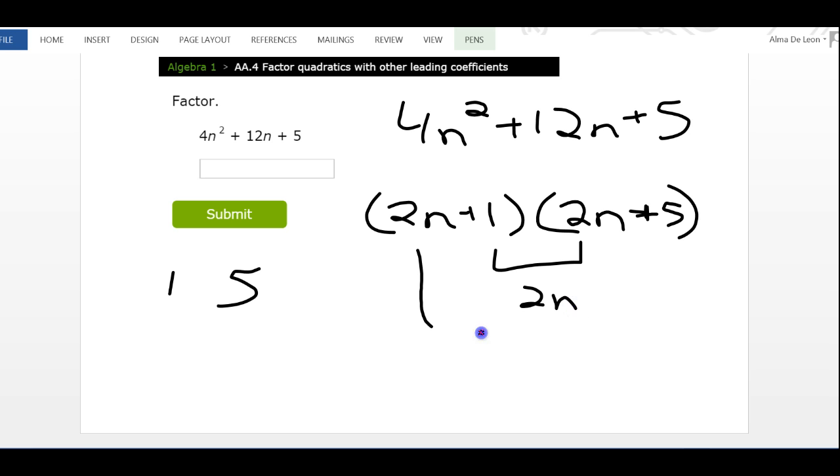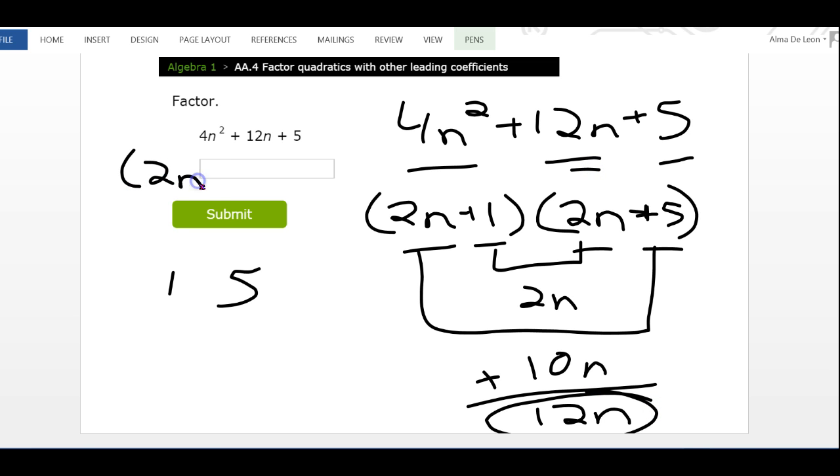1 times 2n is 2n, 2n times 5 is 10n. If I add those together, 2n + 10n is 12n. The beginning works: 2n times 2n gives me 4n². 1 times 5 is positive 5, that works. If I multiply the middle and the outside of my parentheses I end up with positive 12n, which is what I want. So my answer is (2n + 1) times (2n + 5).